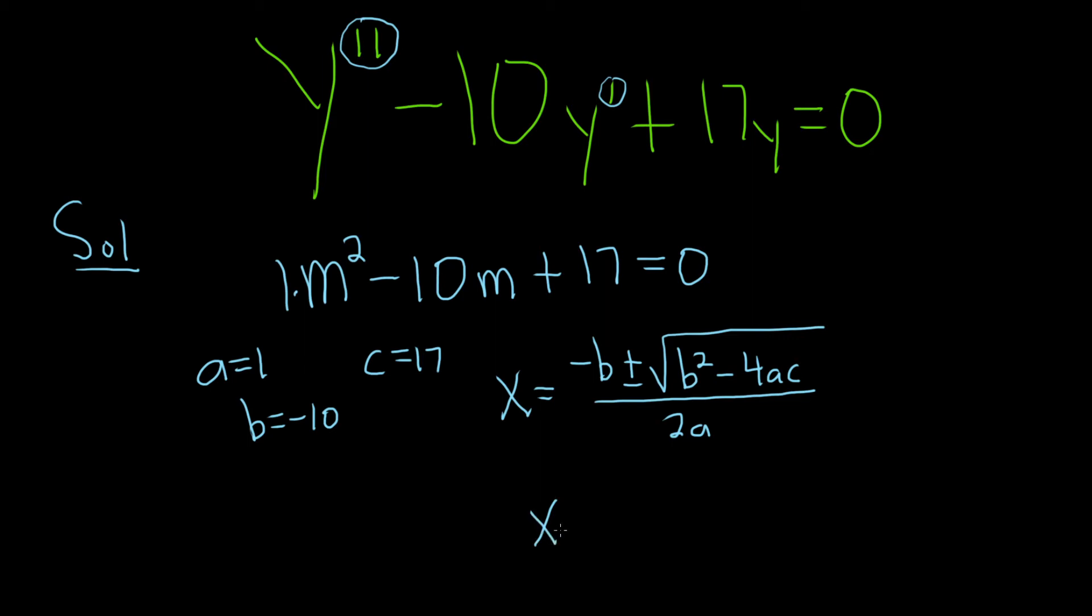So x is equal to negative negative 10, because b is negative 10, so this is 10, plus or minus the square root of... So b squared is going to be negative 10 squared, so that's 100. Minus 4 times a is 1, and then c is 17. All over 2 times a, so 2 times 1.